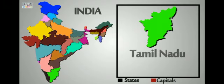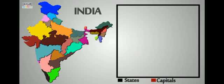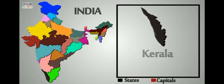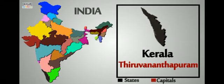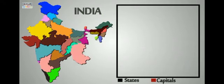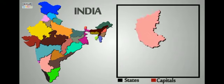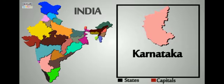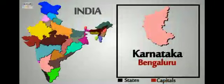This one is Tamil Nadu and its capital is Chennai. Next is Kerala and its capital is Thiruvananthapuram — I know it's quite a long name. Next is Karnataka and its capital is Bangalore.